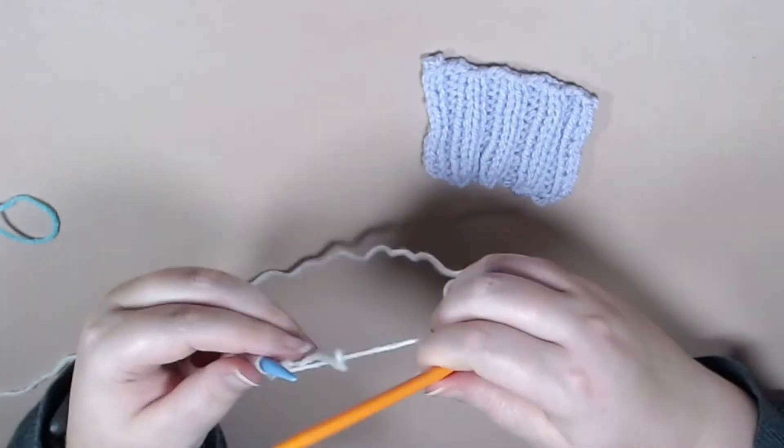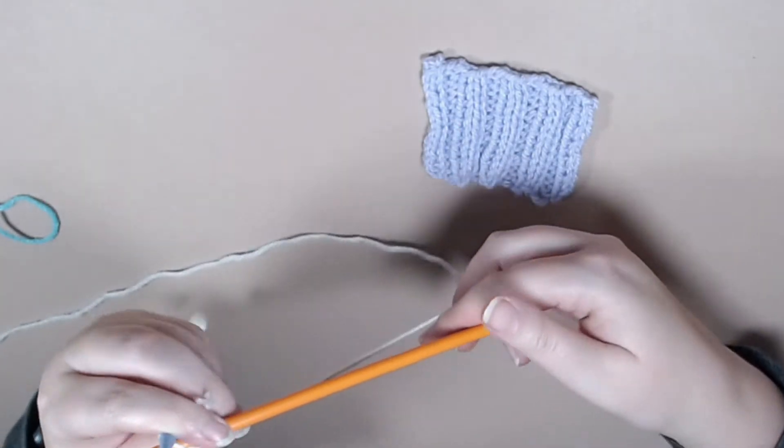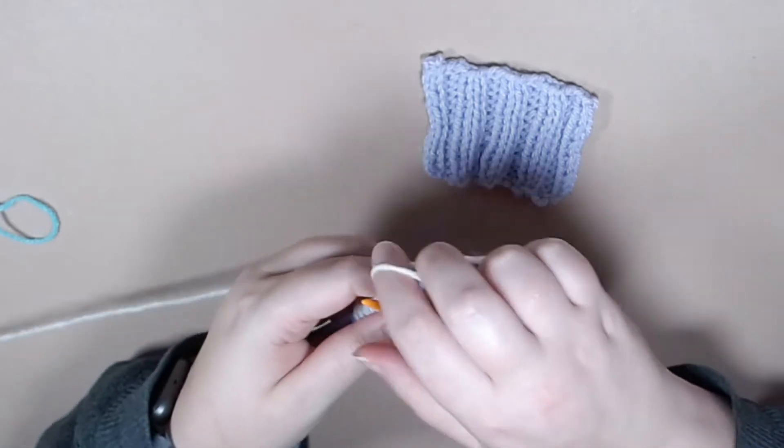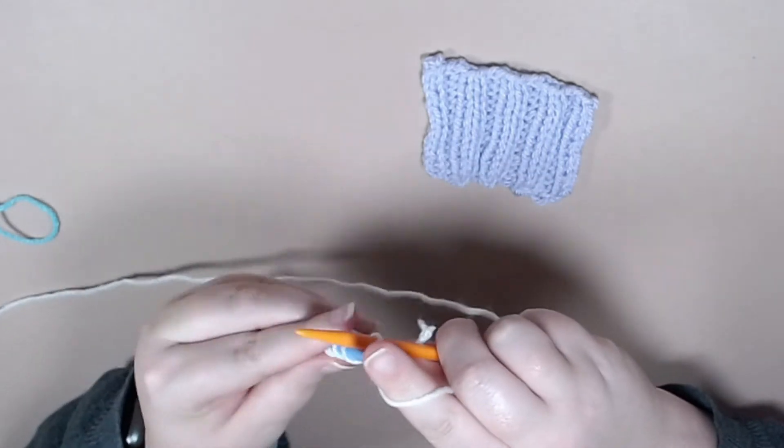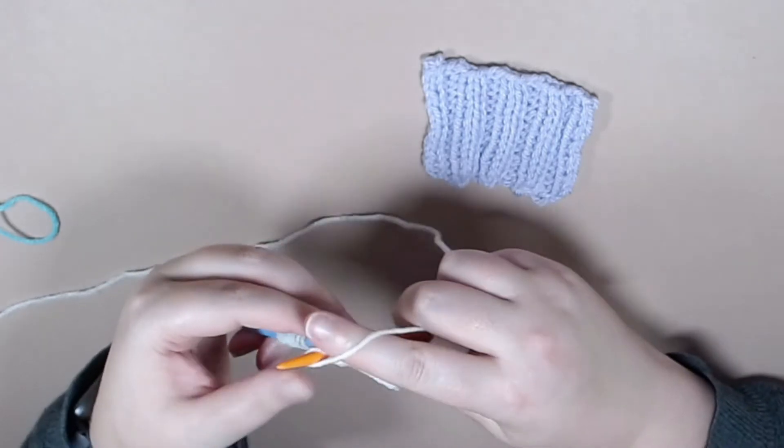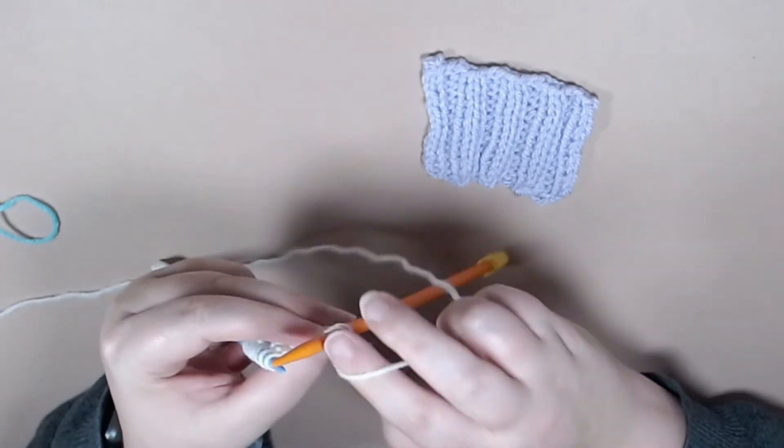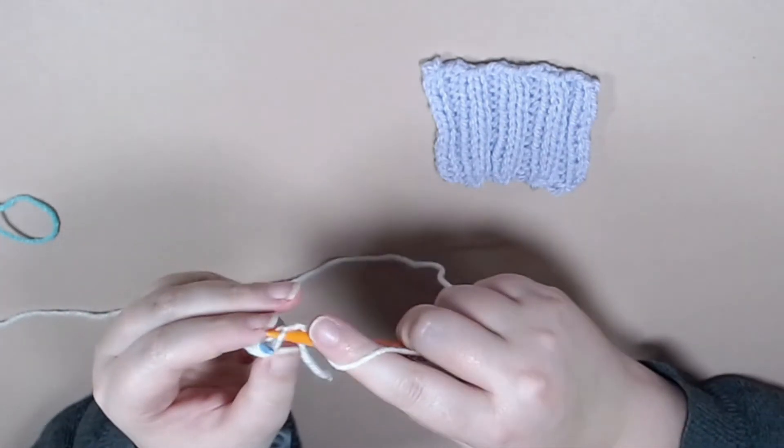And we're going to knit 2. Then we are going to turn our work, and we're going to start off by purling 2. And then we'll start our repeat for this row, which is going to be knitting 2 and purling 2.